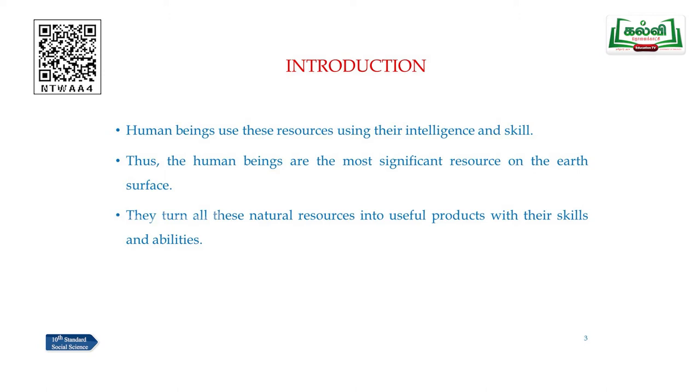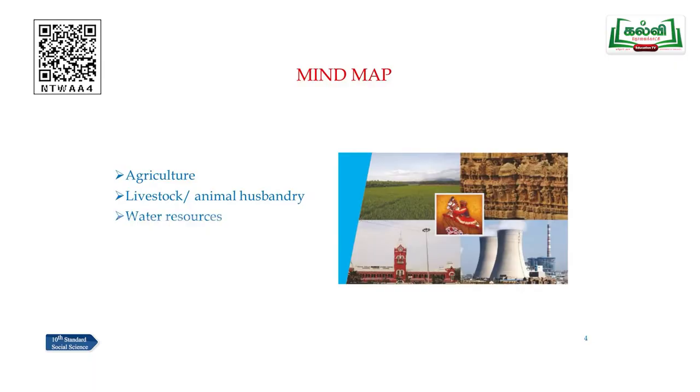Let us move through the topics one by one. In this chapter we have a small mind map. We have to learn agriculture, livestock or animal husbandry, and water resources. The first important topic is agriculture.